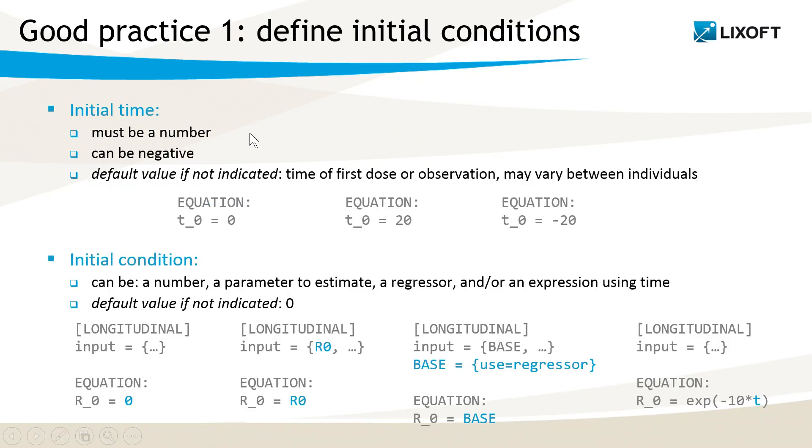The first good practice is to define explicitly the initial time and initial conditions in the model. The initial time must be a number, most of the time it will be zero, but it can also be positive or negative, for instance if you have observations at negative times in your dataset. If the start time is not indicated in the model, it will be the time of the first dose or observations from the dataset, and may vary from individual to individual. There are a few situations where this can be useful, for instance if you have a tumor growth model where the initial tumor size is defined via a regressor and the initial time in the dataset is not zero.